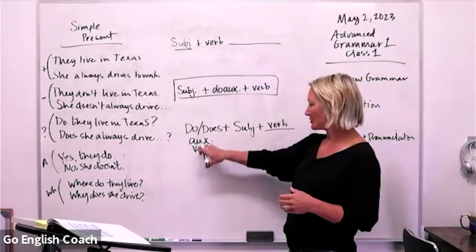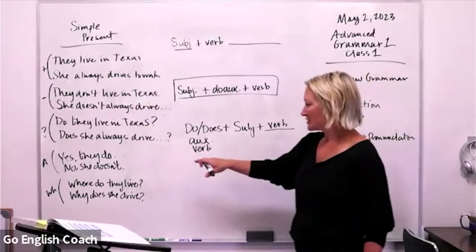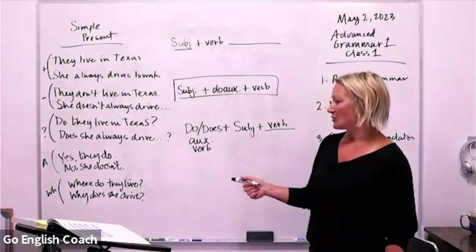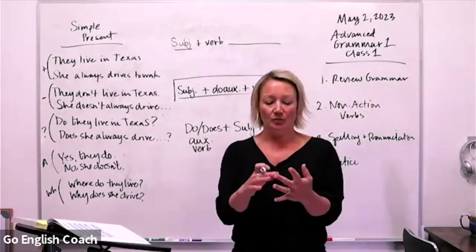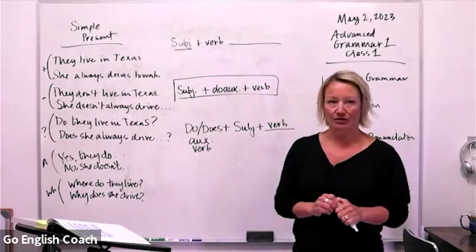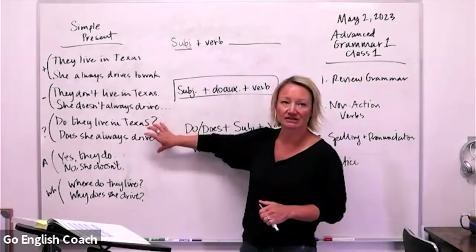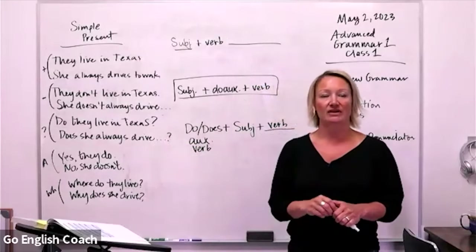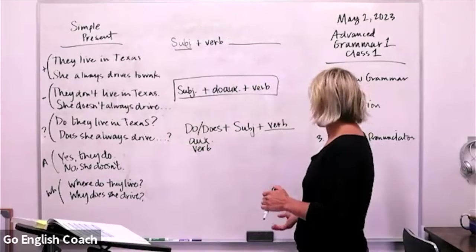So your formula for questions is: auxiliary verb (do/does) + subject + main verb. Then your answer is 'Yes, they do' or 'No, she doesn't.' For wh-questions — who, what, where, when, why — for example: 'Where do they live?' or 'Why does she drive?' Those are different from yes/no questions where the answer is either yes or no. That's a very fast overview of the simple present.